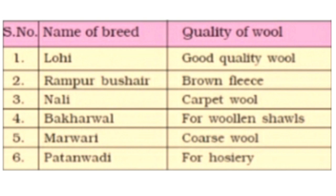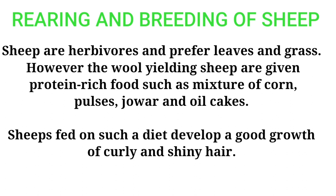There are six important wool-yielding breeds of sheep found in India. We know that sheep are herbivores and prefer leaves and grass. But wool-yielding animals are also given protein-rich food, like a mixture of corn, pulses, jowar, or oil cake. Sheep fed on such a diet develop a good growth of curly, shiny, and fluffy hair.